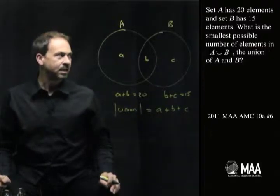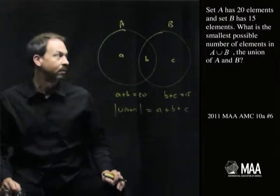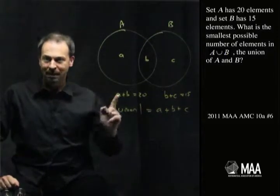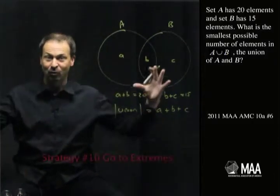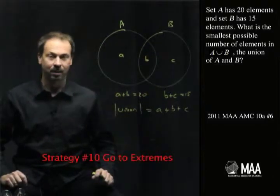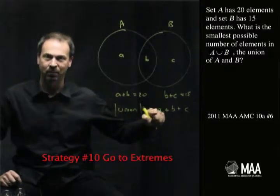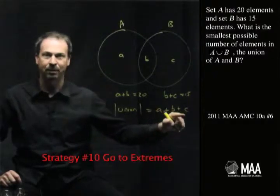But what I'm going to note here is the question asks for the smallest possible number of elements in this union, which makes me think of strategy number 10, which is go to extremes. We want to go to the extreme of the smallest in this case. So let's look at this union and see what is the smallest possible value it could take. It's a plus b plus c.